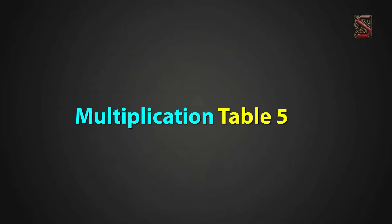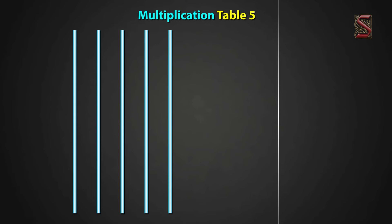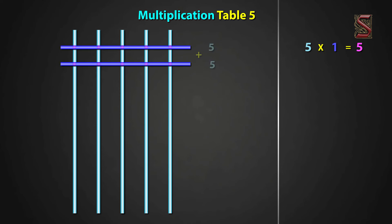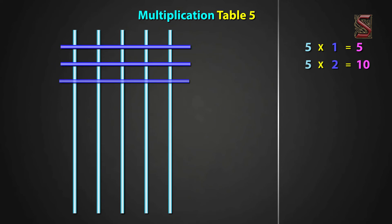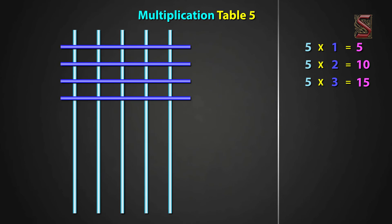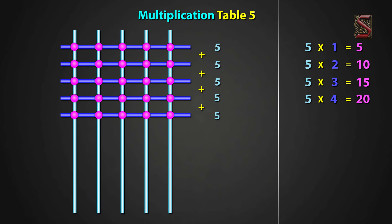Multiplication table 5. We draw 5 standing lines. For 5 one times, draw 1 sleeping line. We have 5 meeting points. So, 5 one times equal to 5. 5 two times, draw 2 sleeping lines. We have 10 meeting points. So, 5 two times equal to 10. 5 three times, draw 3 sleeping lines. We have 15 meeting points. And 5 three times equal to 15. 5 four times, draw 4 sleeping lines. We have 20 meeting points. And 5 four times equal to 20. 5 five times, draw 5 sleeping lines. We have 25 meeting points. Now, 5 five times equal to 25.